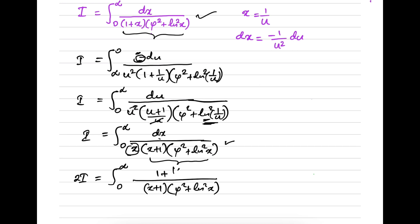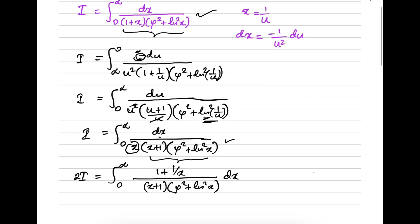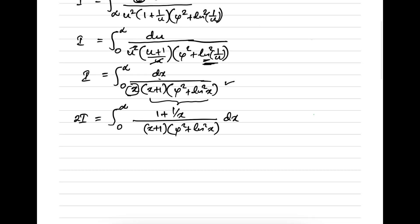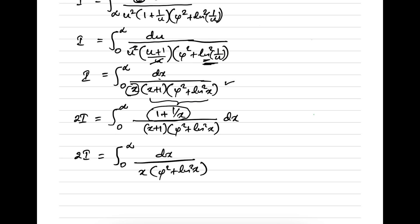We can write 1 plus 1 over x in the numerator. Taking the common denominator, x plus 1 over x times (x plus 1) cancels, so 2 times i equals the integral from 0 to infinity of dx over x times (phi squared plus natural log squared of x).